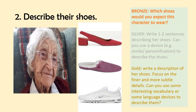Number two on that list says 'describe their shoes.' Which shoes would you expect this character to wear? For silver, write a couple of sentences describing those shoes — could you use a literary device, for example personification or a simile? For gold, write a description of her shoes focusing on finer and more subtle details, using interesting vocabulary or language devices — talk about the laces, the bow, the fabric, perhaps a smell, or link the shoes to something else.